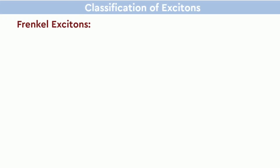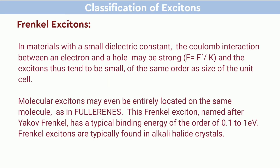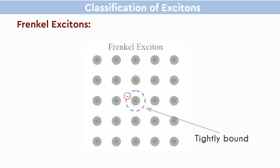Classification of excitons: Frenkel excitons. In materials with a relatively small dielectric constant, the Coulomb interaction between an electron and a hole may be strong, and the excitons tend to be small — of the same order as the size of the unit cell. Molecular excitations may even be entirely located on the same molecule, as in fullerene. This Frenkel exciton, named after Jakub Frenkel, has a typical binding energy of the order of 0.1 to 1 electron volt. Frenkel excitons are typically found in alkali halide crystals.